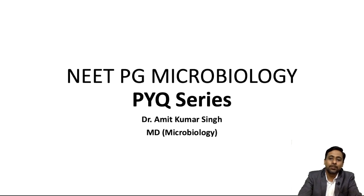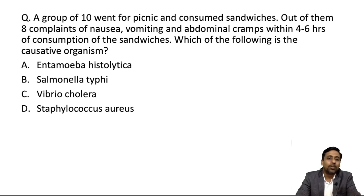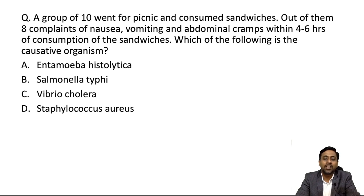PYQ number 8: food poisoning. The question: a group of 10 went for a picnic and consumed sandwiches. Out of them, 8 complained of nausea, vomiting and abdominal cramps within 4 to 6 hours of consumption of the sandwiches. Which of the following is the causative organism? Options: Entamoeba histolytica, Salmonella typhi, Pseudomonas, Staphylococcus aureus.